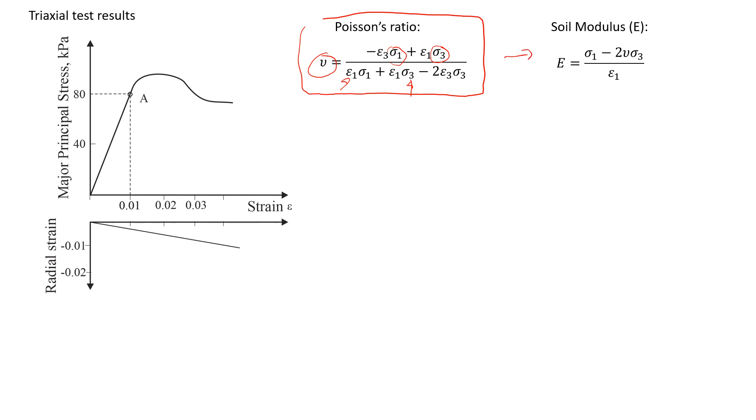Now let's look at this formula before we start doing an example. This is how we estimate soil modulus. You probably have heard of Young's modulus. It does the same thing. In this case we need to know principal stresses, which we will get from the experiment. We also need to know Poisson's ratio and epsilon1.